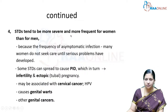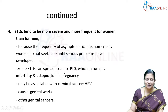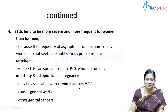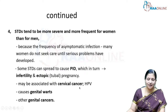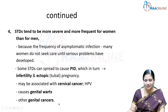STIs can be more severe and more frequent in women because, due to the high frequency of asymptomatic infections, women often do not seek care until serious problems have developed. STIs can spread to the upper genital tract, leading to infertility and ectopic pregnancies. Human papillomavirus infection causing warts is also associated with cervical, vaginal, and vulval cancers.